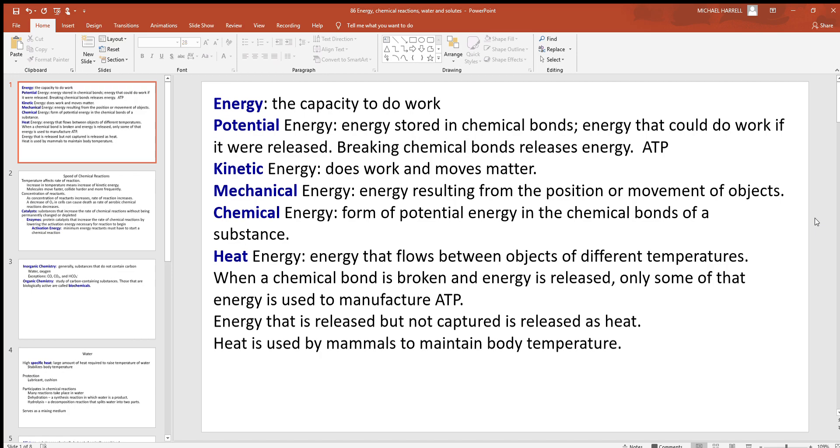When a chemical bond is broken and energy is released, only some of that energy is used to manufacture ATP. Energy that is released but not captured is released in the form of heat. So we can generate a large amount of heat very rapidly when we need to. Heat is used by mammals to maintain body temperature. Again, body temperature and pH balance are very important when it comes to the shape and function of proteins.